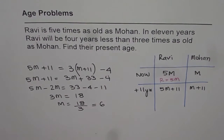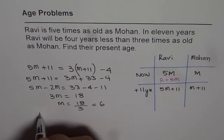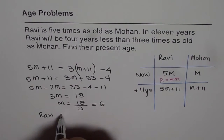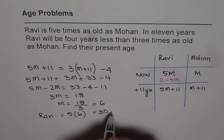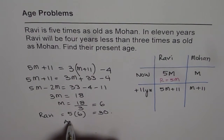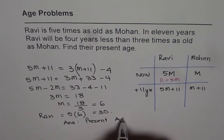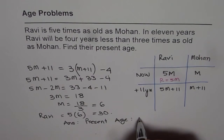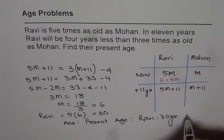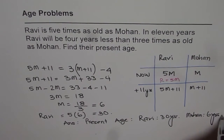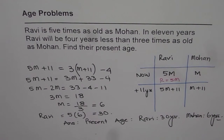So we know Mohan is 6 years old. And Ravi should be 5 times 6, that is 30. So the present age of Ravi is 30 years and the present age of Mohan is 6 years. This is how you can solve such questions. Thank you.